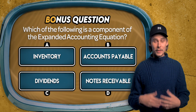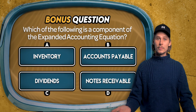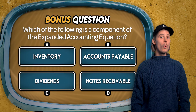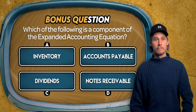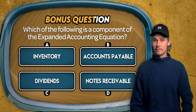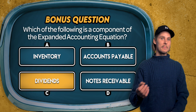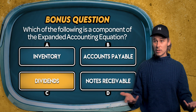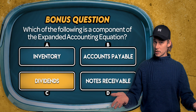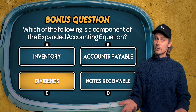Bonus question. Which of the following is a component of the expanded accounting equation? Inventory, accounts payable, dividends, or notes receivable? The answer is C. In the expanded accounting equation, equity is broken down into its components, which includes things like capital contributions, revenue, expenses, and of course dividends.